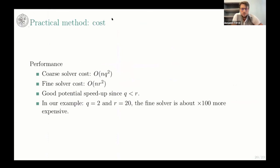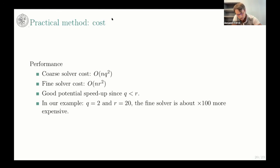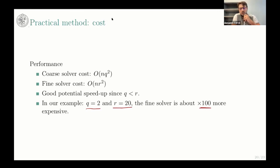The coarse solver costs O(N · Q²) and the fine solver costs O(N · R²). If Q is much smaller than R, we have a really good potential speedup. In our experiments, we often used Q = 2 and R = 20, so the fine solver is 100 times more expensive than the coarse solver — meaning the coarse solver is essentially free compared to the fine solver. This is really nice.